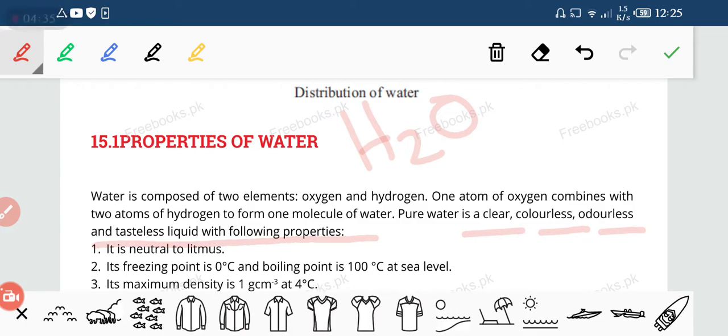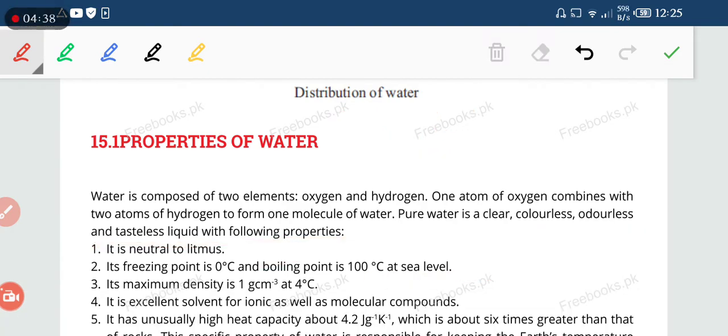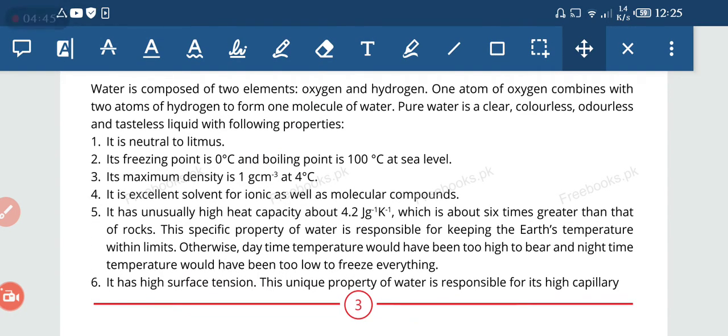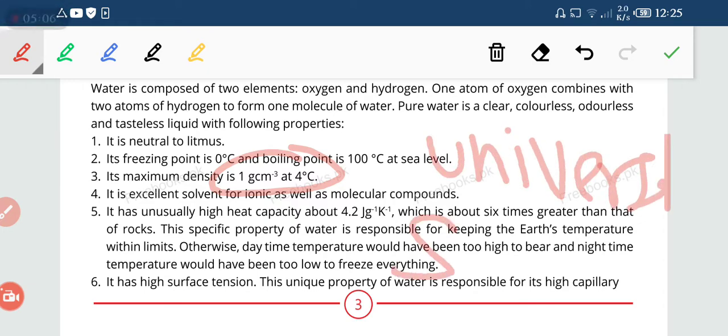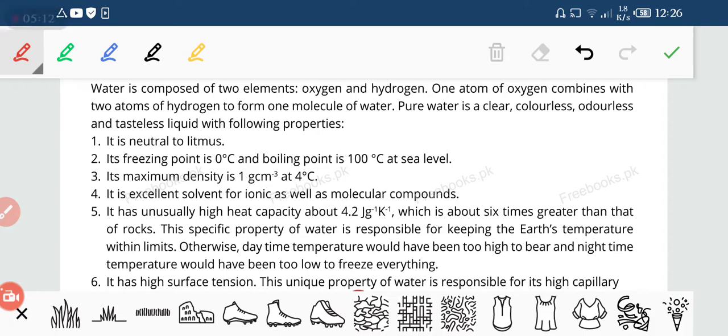The important point is that the litmus paper doesn't give any reaction. It is neutral, it doesn't change its color. The freezing point is 0 degree Celsius and boiling is 100. Its maximum density is 1 gram per centimeter cube at 4 degree Celsius. It is excellent solvent for ionic as well as molecular compound, and this one we call universal solvent.